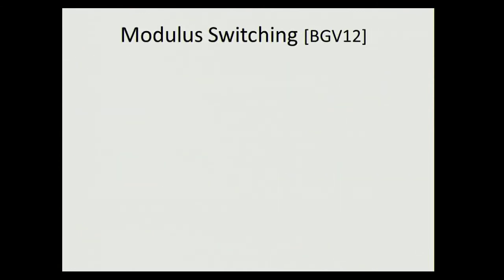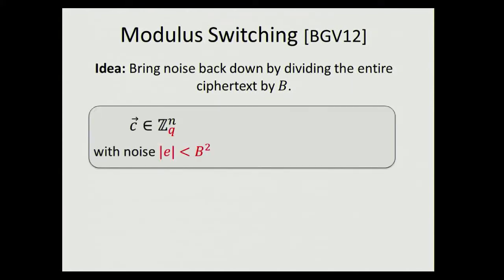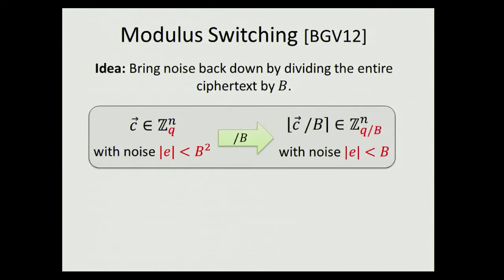This is where module switching comes into play. Module switching says you can bring the noise back down simply by dividing the entire ciphertext by a factor B. We had noise B, it went up to B², and now we just divide everything by B, so the noise goes back down to B. The modulus also decreases to Q/B—that's why it's called module switching—but the noise is restored. Special rounding is used to ensure the message bit is preserved during division.